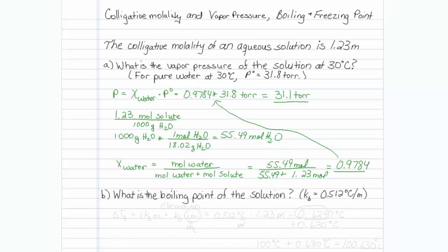Part B of this question says, what is the boiling point of the solution? And we're given the information KB is equal to 0.512 degrees Celsius per molal. Well remember that this is boiling point elevation, and the formula is the change in boiling point from where it would be for a pure solution is equal to i KB M. M is actually the value we've been given, the colligative molality.